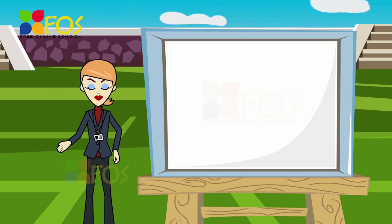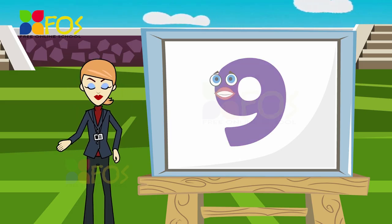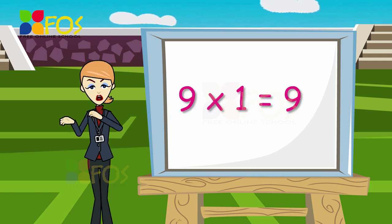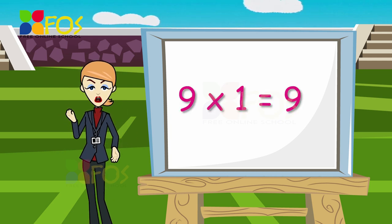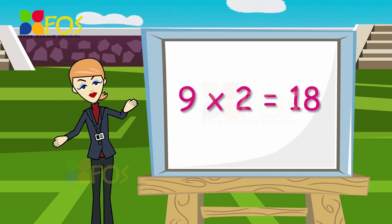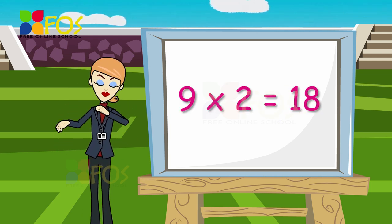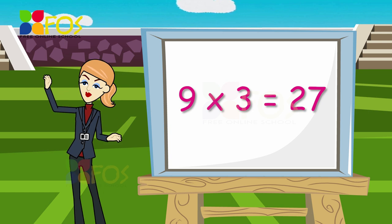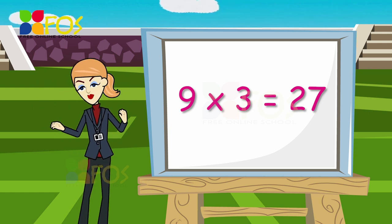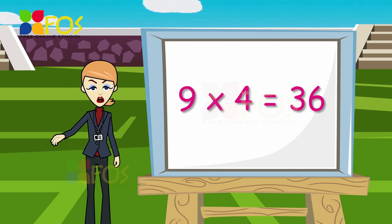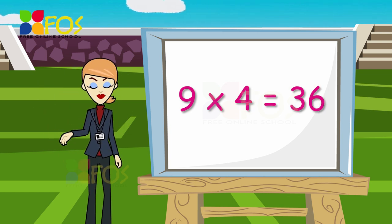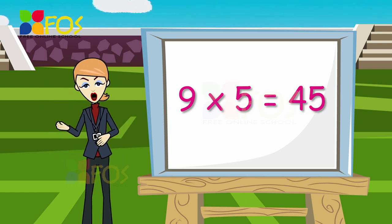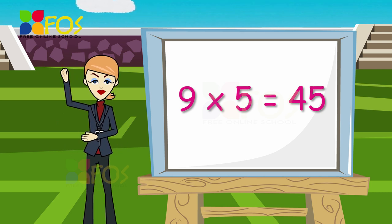Here is the table of nine. Nine ones are nine. Nine twos are eighteen. Nine threes are twenty-seven. Nine fours are thirty-six. Nine fives are forty-five.